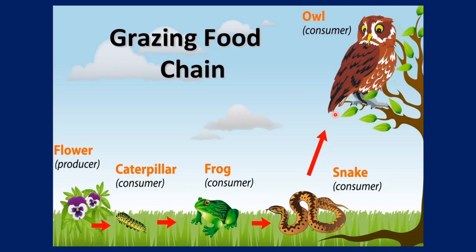There are different varieties of food chains — detritus food chain, grazing food chain, and others. In a grazing food chain, a flower as producer is eaten by a caterpillar, the caterpillar is eaten by a frog, the frog is eaten by a snake, and the snake is eaten by an owl. The types of food chain keep changing based on what organisms are present in that environment — forest, freshwater, and marine ecosystems all differ.